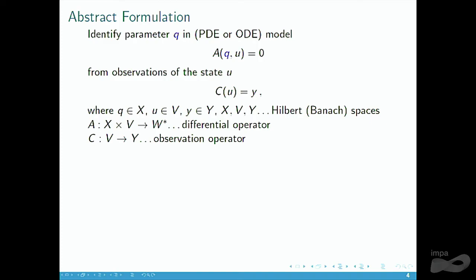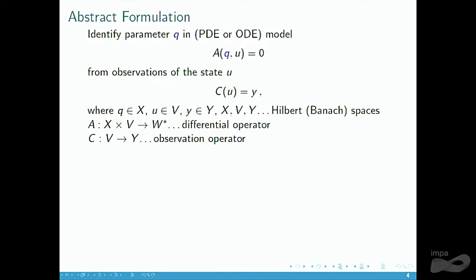The abstract form of all these problems is: we have some operator that models the PDE or ODE, in which both the parameter Q and the state U are involved. Then one has some observational equations — for instance, C could be a trace operator if we observe at the boundary. It could also happen that C contains unknown parameters, for instance if one does not know some noise distribution. For simplicity, I will just denote dependence on the state U here.